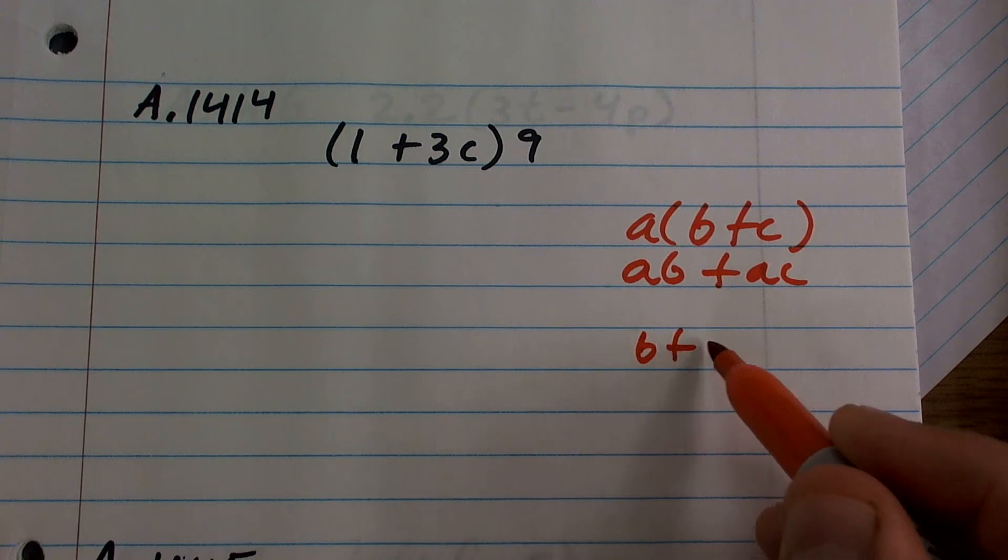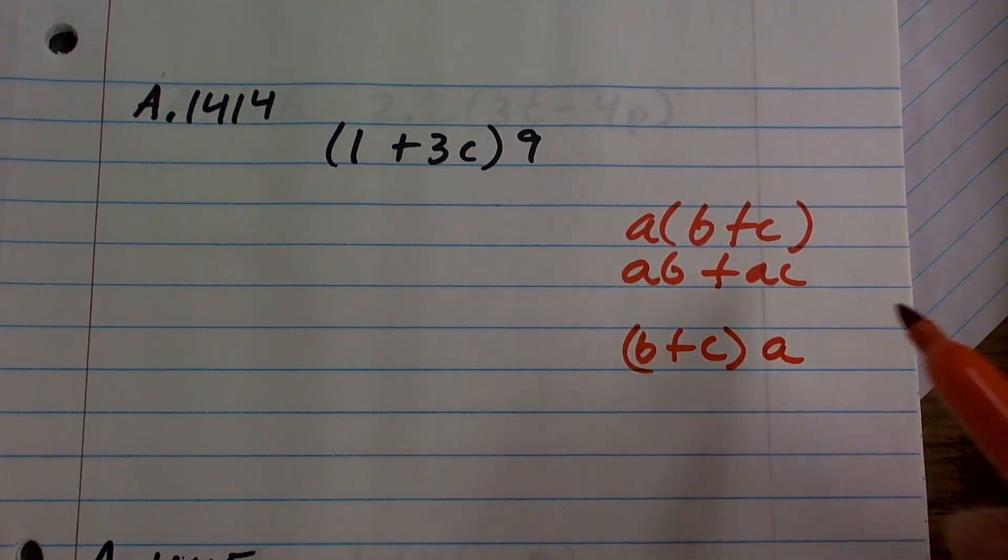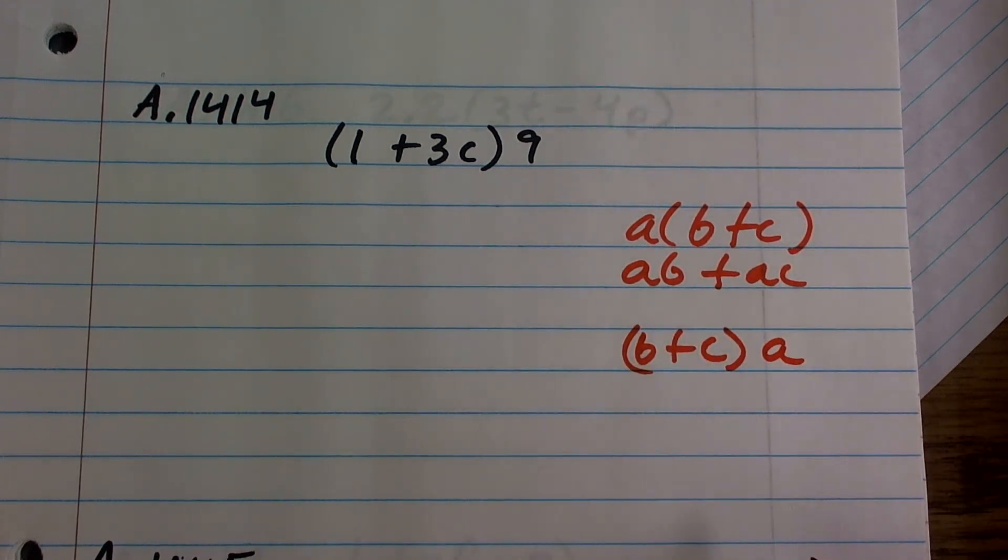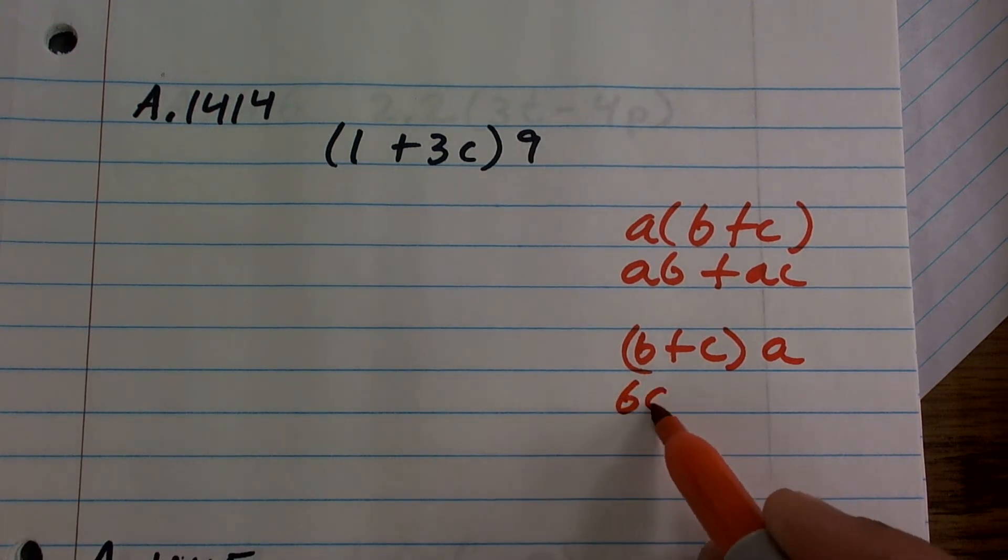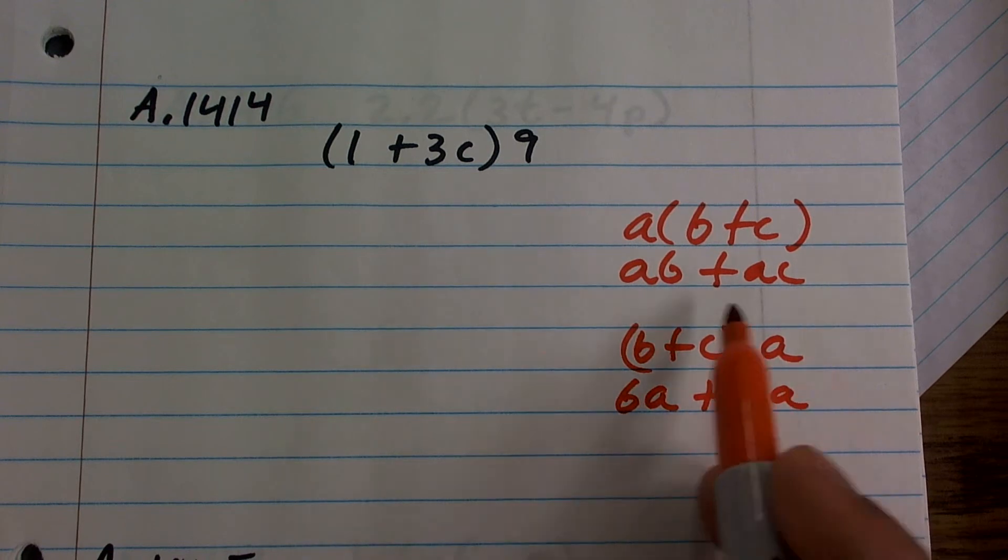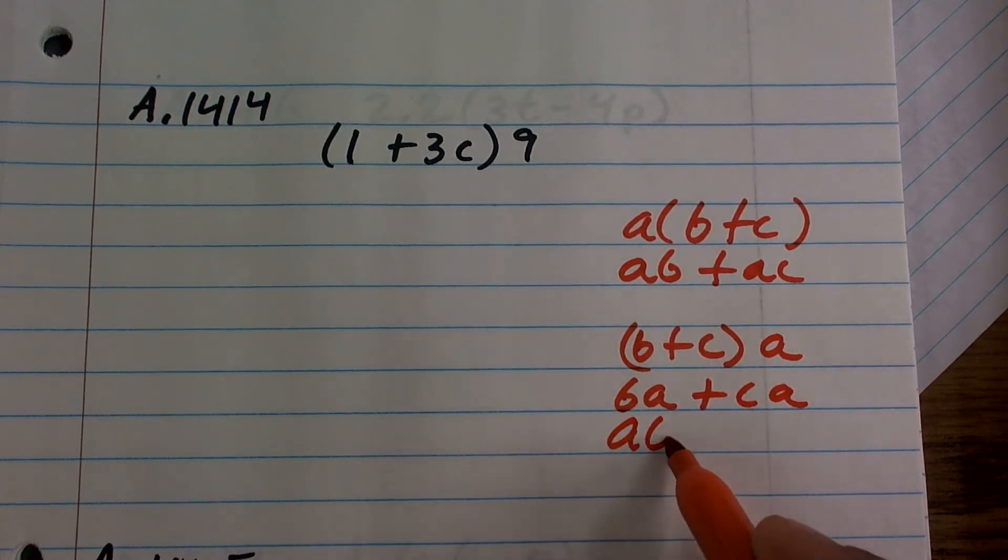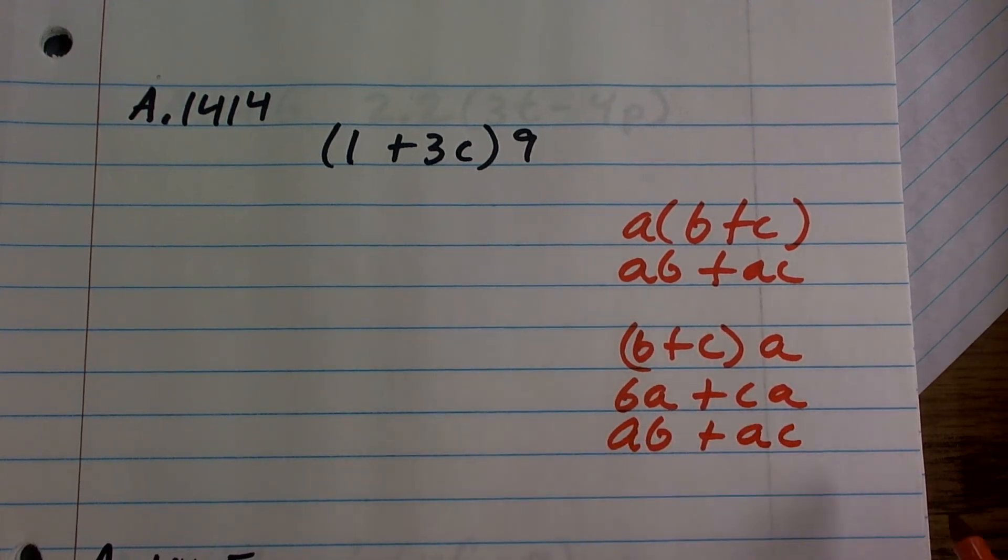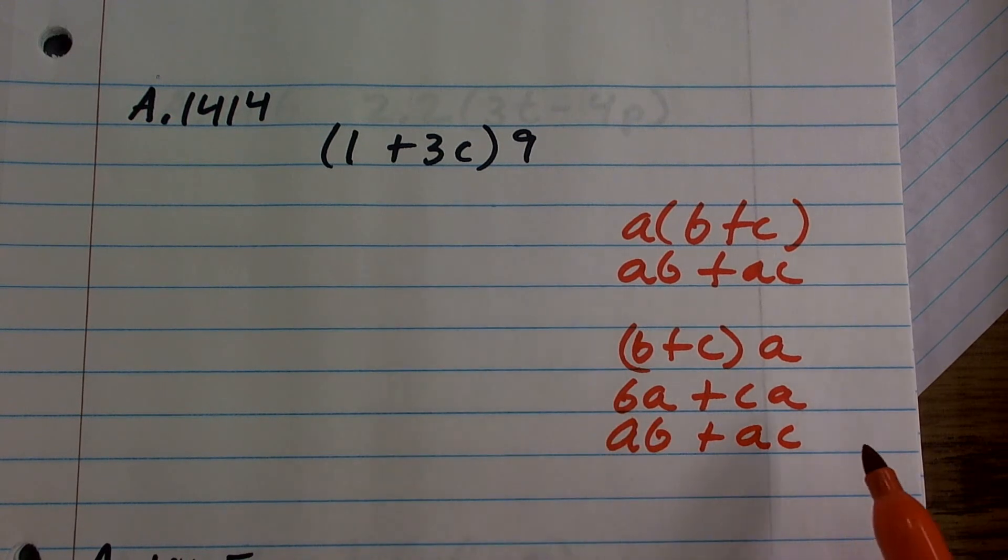But a lot of times we forget that we can also write the distributive property like this, where it's still going to apply. I mean, remember, by using your commutative property, it doesn't matter if I write the A times there, then I just rewrite it like this. You're still going to get the exact same answer.